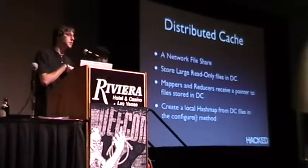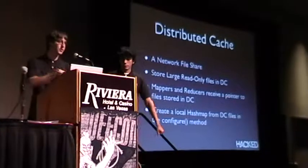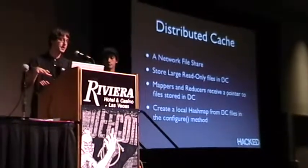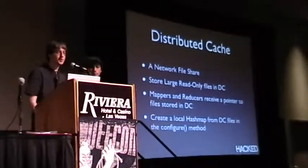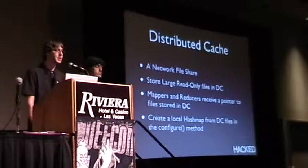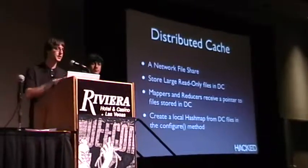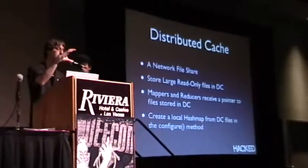What we've talked about so far is taking an input data set, running it through the two phases, and spitting out an output data set. Then you have a facility called Distributed Cache where you can compute against a second data set in your mapper or reducer.